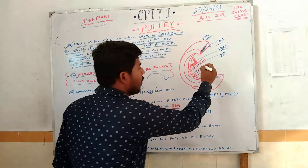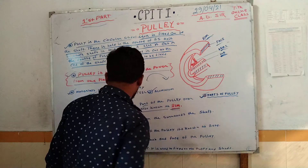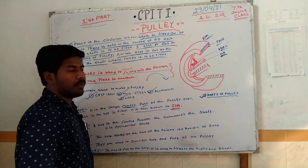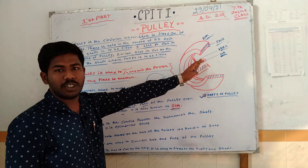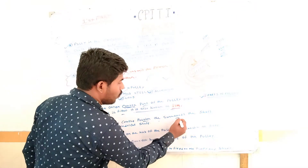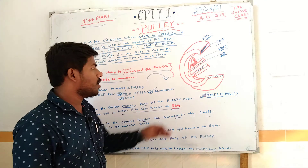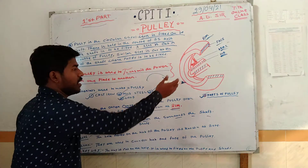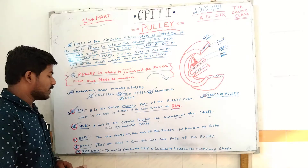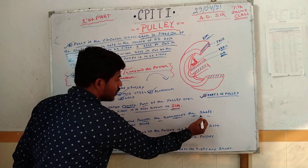When we look at this, the hub is the center position. The hub is the center position surrounding the shaft. The hub is the central position of the pulley surrounding the shaft.